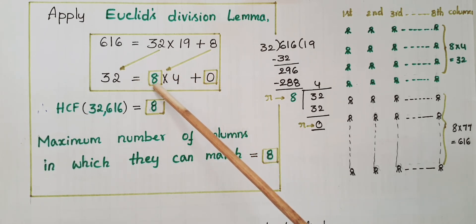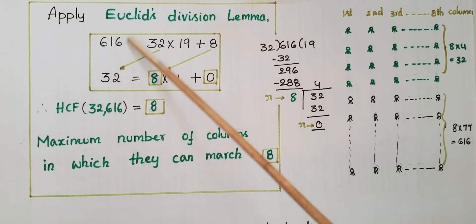Here the divisor is 8, so this is the HCF of 32 and 616. Therefore, HCF of 32 and 616 is equal to 8. Therefore, maximum number of columns in which they can march is equal to 8.